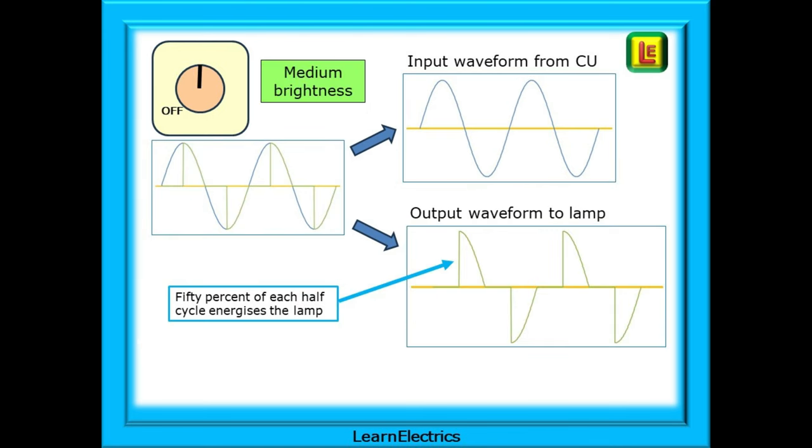Turn the knob to halfway and we will have more brightness. The input waveform is unaffected—it stays the same. The output though has increased. The variable resistor in the customer control has less resistance. Less resistance means that more charging current gets to the capacitor and it therefore charges up more quickly. The result is that it fires sooner. In this case, halfway through each half cycle. 50% of each half cycle is available to energize the lamp.